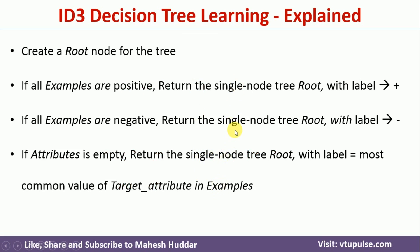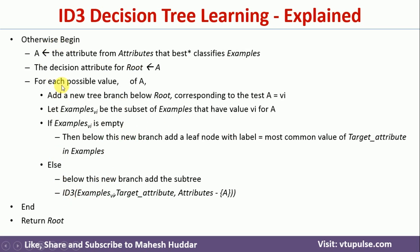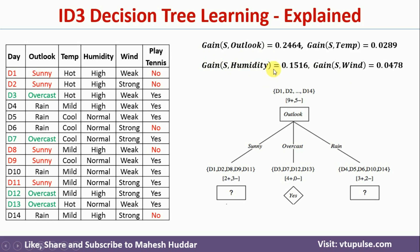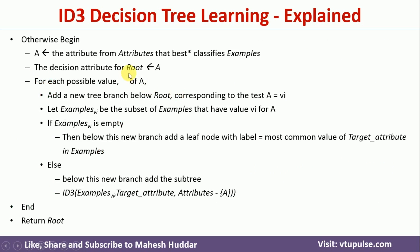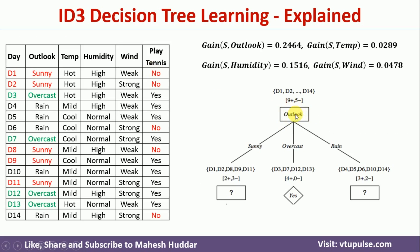If none of these three termination conditions are satisfied, the following steps will be executed. The first step is to identify the best attribute — the one that classifies the examples best. We calculate the information gain. I have calculated this in the previous video; the link is in the description. The outlook node has the maximum information gain among the four attributes, so we assign outlook to A and then assign outlook to the root node. You can notice that a node is created and outlook is assigned.